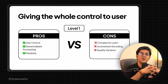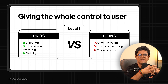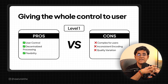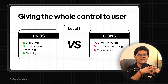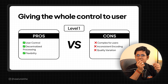So what are the pros of this approach? First, there is flexibility — there is no video processing load on the server itself, and users are in full control. This is great for small applications. But the cons are that there will be inconsistent encoding and quality variation. And lastly, if the user is not that technical, it will be hard for them to convert these videos into proper HLS files or MPEG-DASH files.